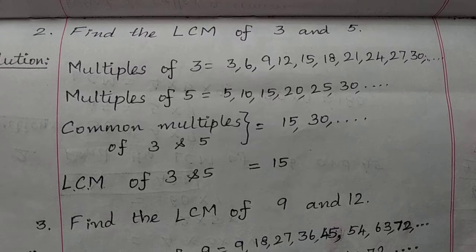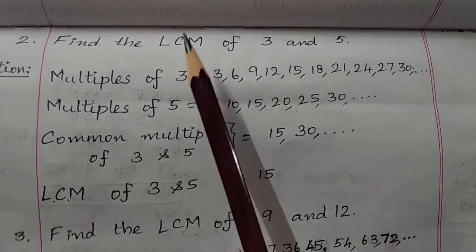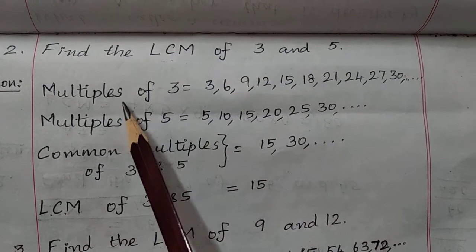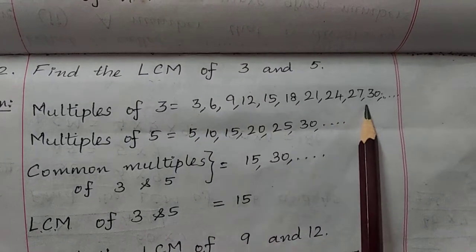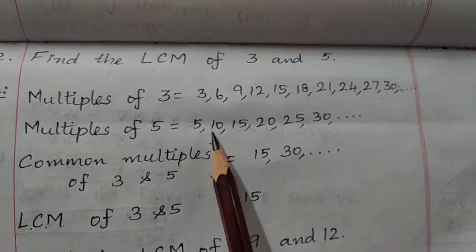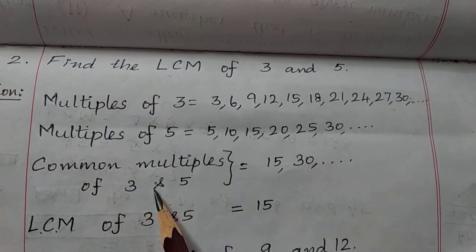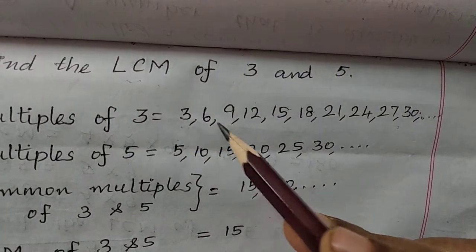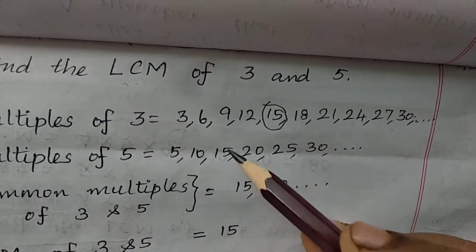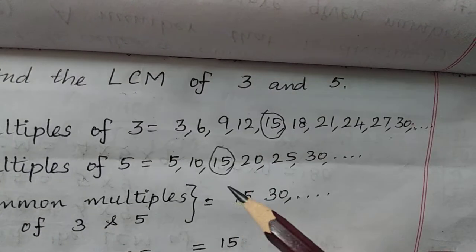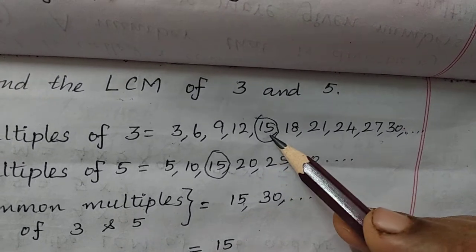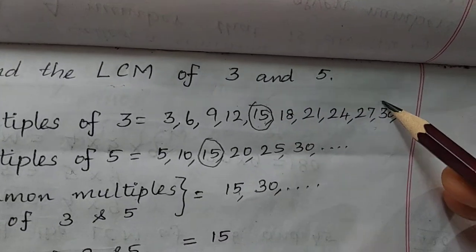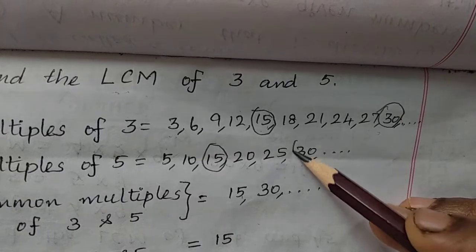Let us see some more examples. Find the LCM of 3 and 5. Find the multiples of 3 and 5, then common multiples, then the least value. Multiples of 3 start with 3 and increase by 3. Multiples of 5 start with 5 and increase by 5. 15 is the first common multiple. The second common multiple will be 30, since common multiples increase by 15.